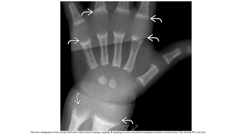AP knee radiographs in this young child with rickets show fraying, cupping, and splaying of the distal femoral and proximal tibial metaphyses, which have lost their zone of provisional calcification.